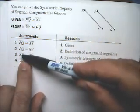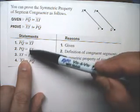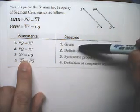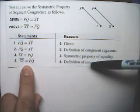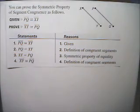Then you can switch this, because if two numbers are equal, you can switch them like that. And then you can go from here to here, again, by the definition of congruent segments.